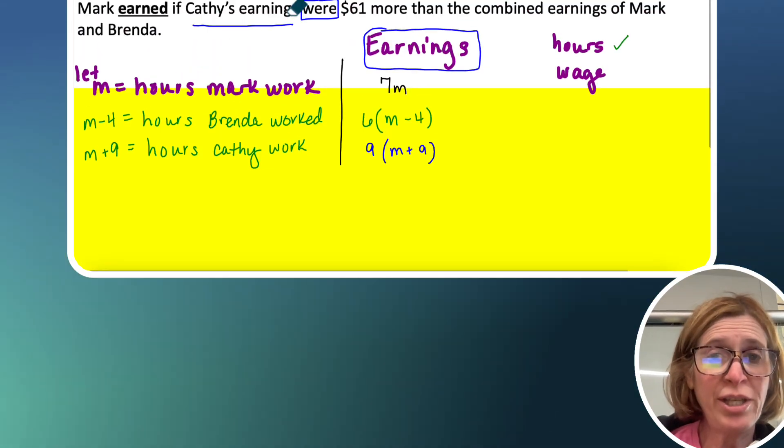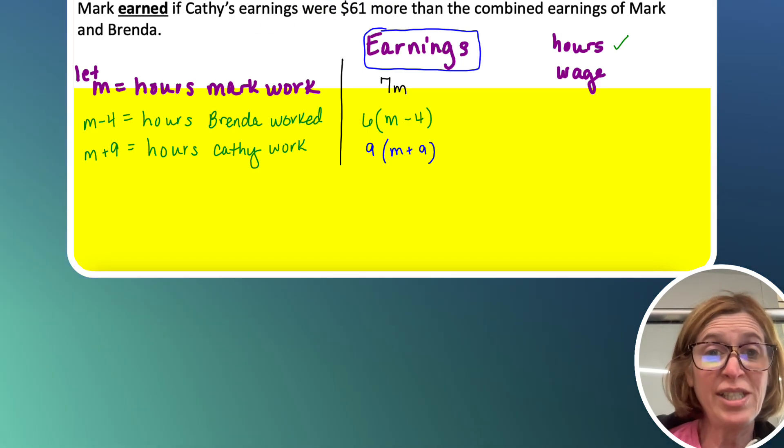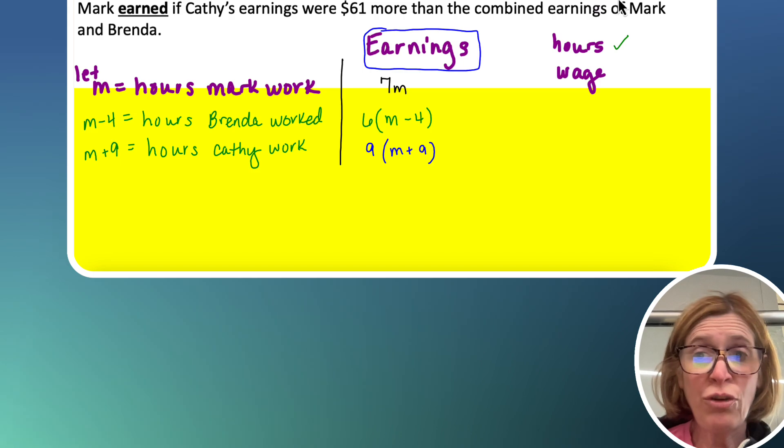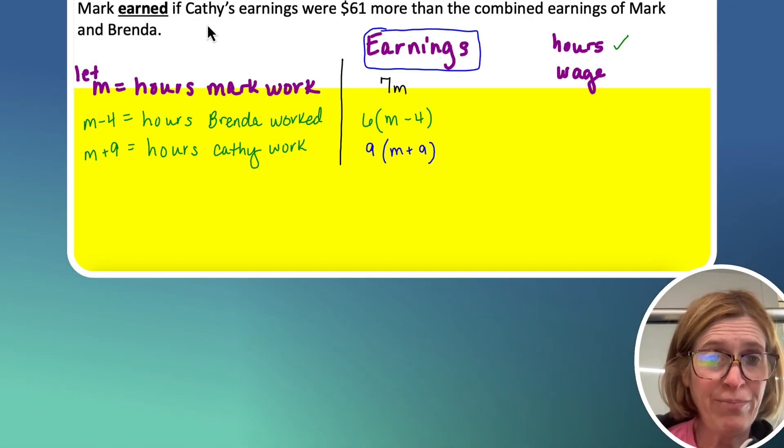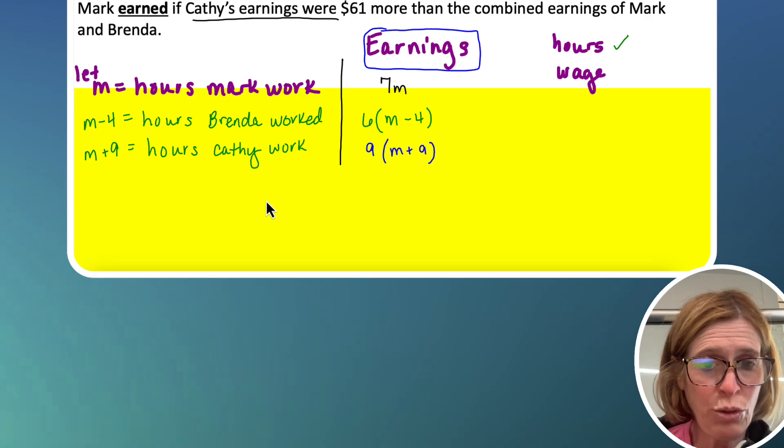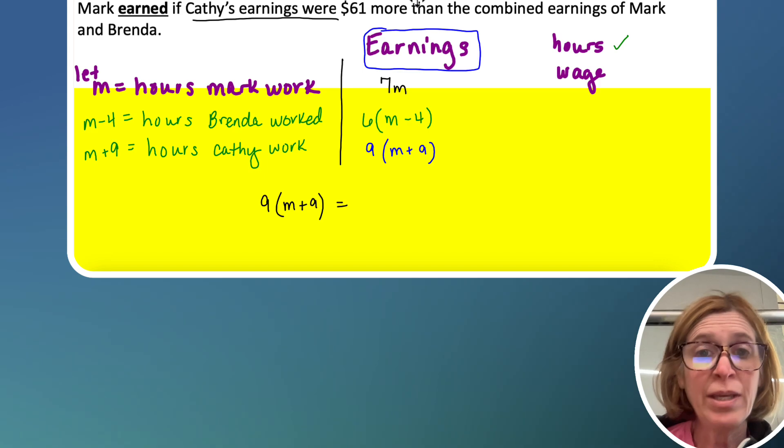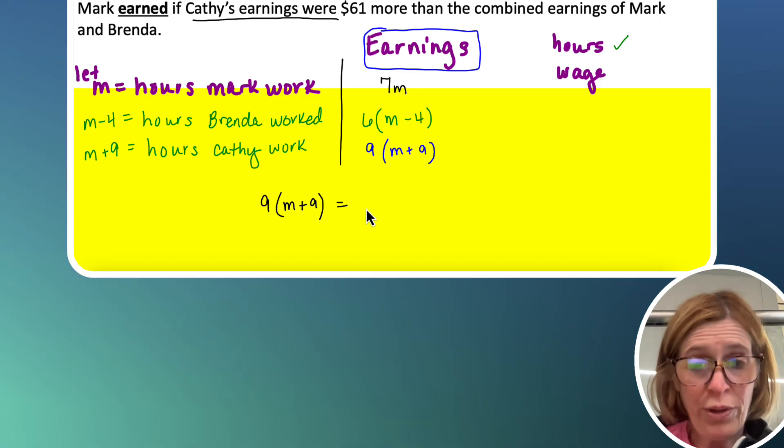Okay, so now the equation, we have to read the equation as it's written, and write our equations in terms of earnings. So find out how much Mark earned if Kathy's earnings were, so Kathy's earnings were nine times M plus nine, were, so means is, 61 more than,